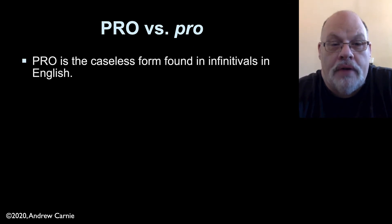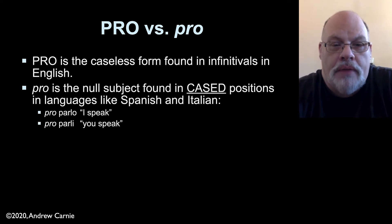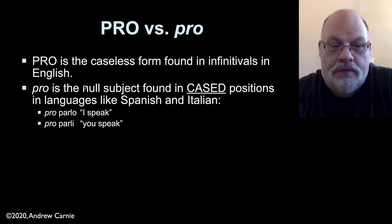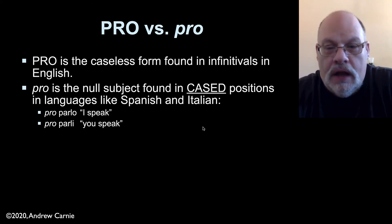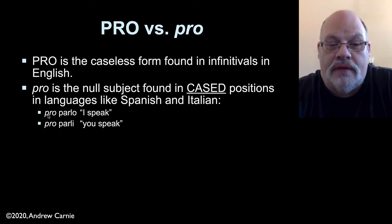Big Pro is a caseless form that's found in infinitivals in English. Little Pro or Baby Pro is a special kind of null subject found in cased positions — not caseless, but case positions — in languages like Spanish, Italian, Chinese, and Japanese, where you simply don't say the subject.